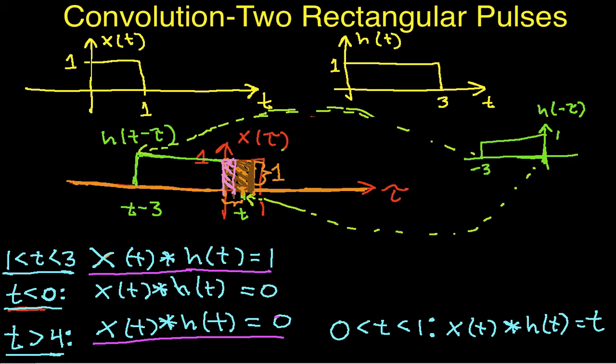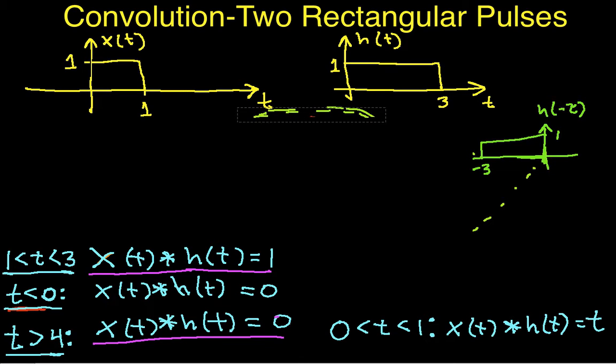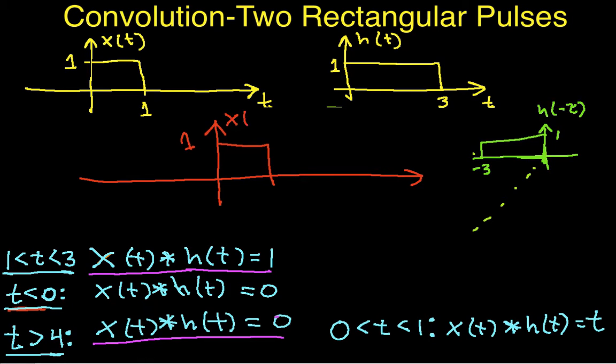The last thing we need to do, the last area that we haven't looked at, is when T is between 3 and 4. So let's clean all this stuff up and draw X one more time. This is X. And now let's take our flipped version of H and move it to a value of T out here, where T is less than 4 and greater than 3.